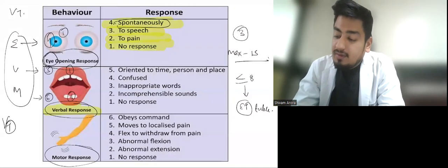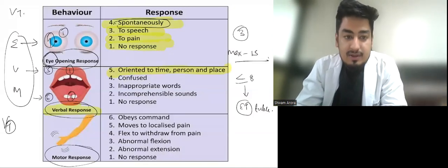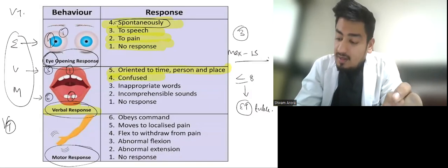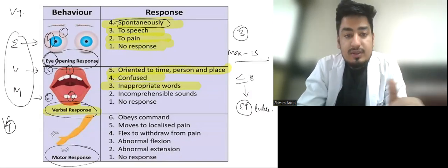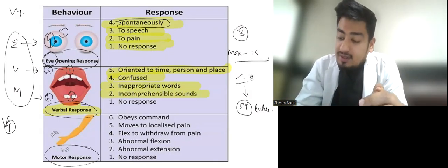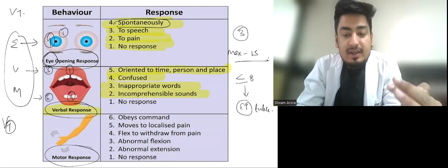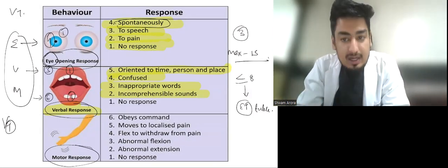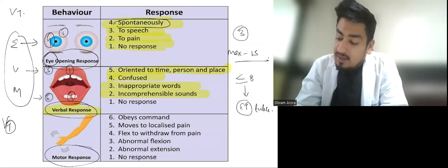In verbal response, five is when patient is oriented to time, place, and person. Four is when the patient is confused. Three is when patient uses inappropriate words. Two is when patient creates incomprehensible sounds, so sounds are produced but no meaningful word is spoken. One is no response.